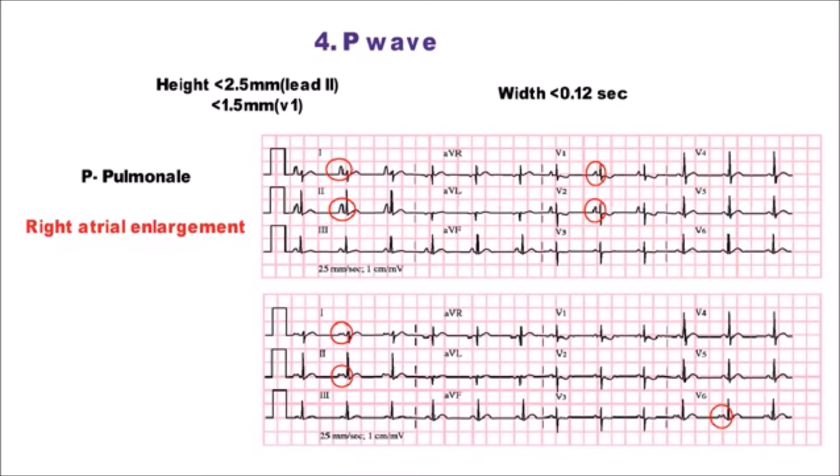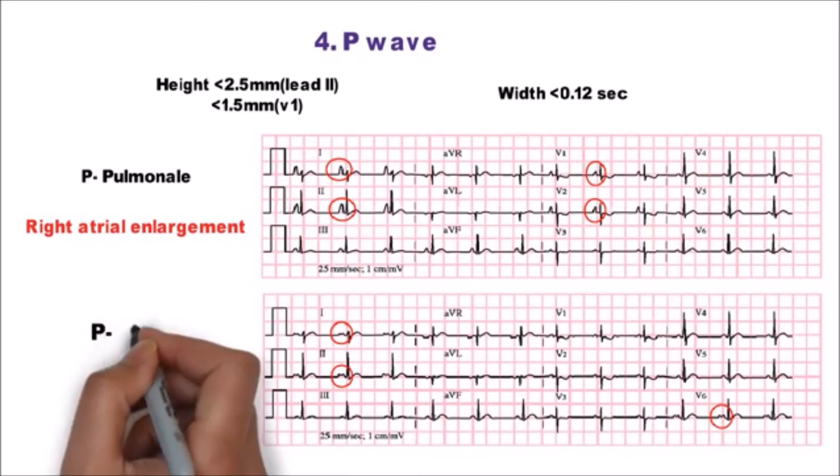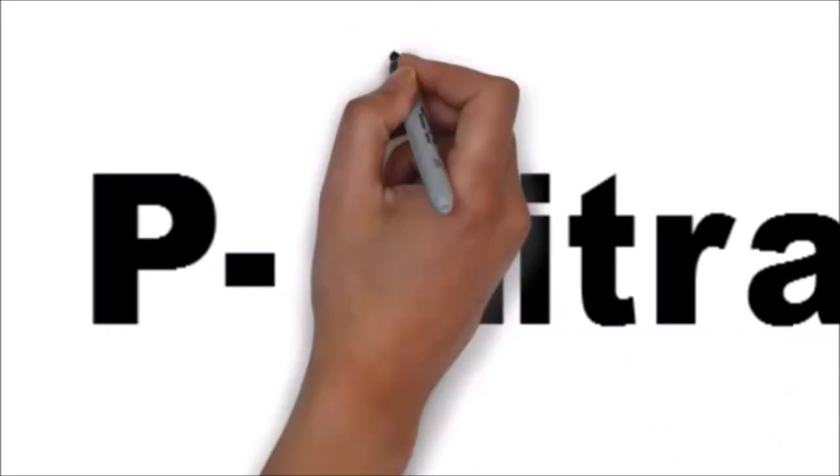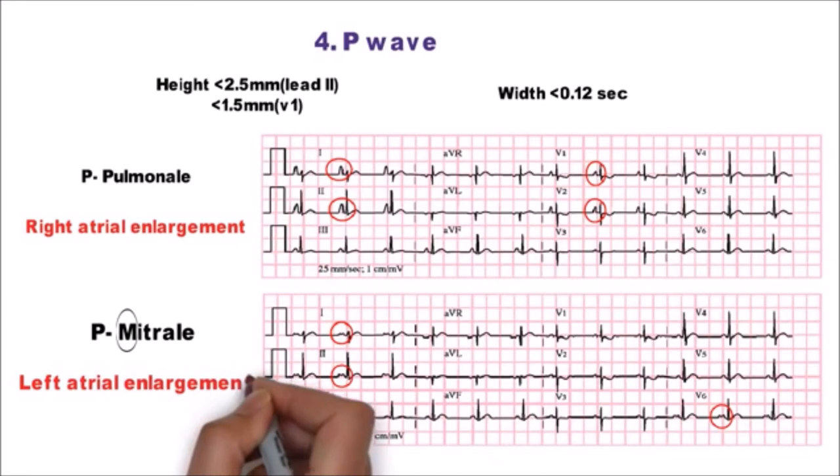And if p-waves are bifid or have a notch in between it is called as p-mitrale. Remember m-shape for mitrale which is seen in left atrial enlargement.